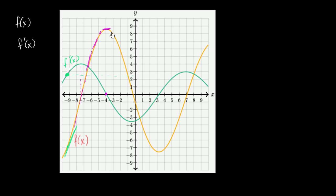So it seems like it's doing a pretty good job of plotting the slope of the tangent line of the orange function. Then our slope becomes more and more negative, and then it hits some minimum point right over here. Then it becomes less and less negative, until it hits a 0 slope again, and then it starts becoming positive until it hits some maximum slope. But then it stays positive and becomes less and less positive. So it looks pretty clear that the orange function is f of x and the green function is f prime of x.